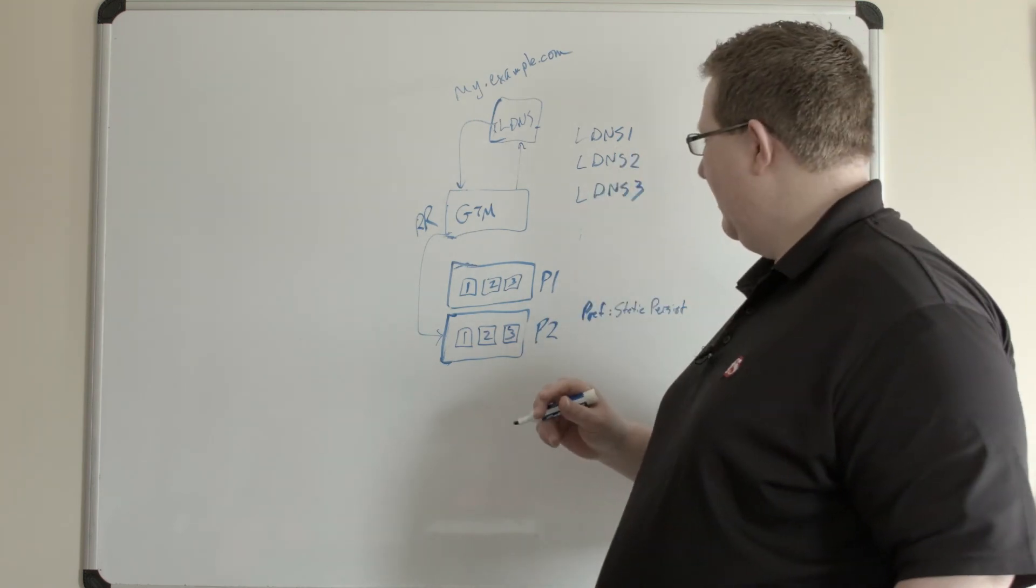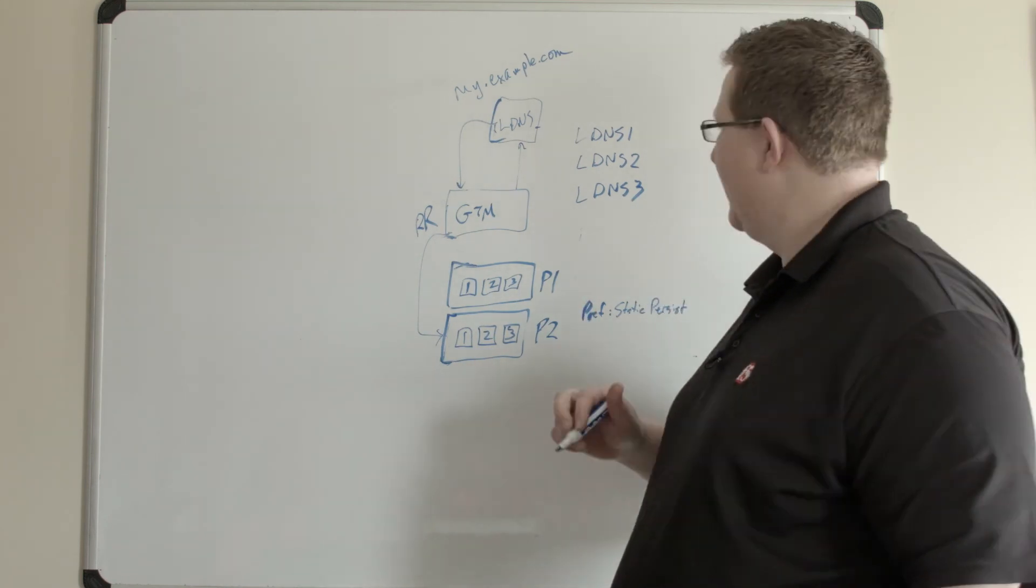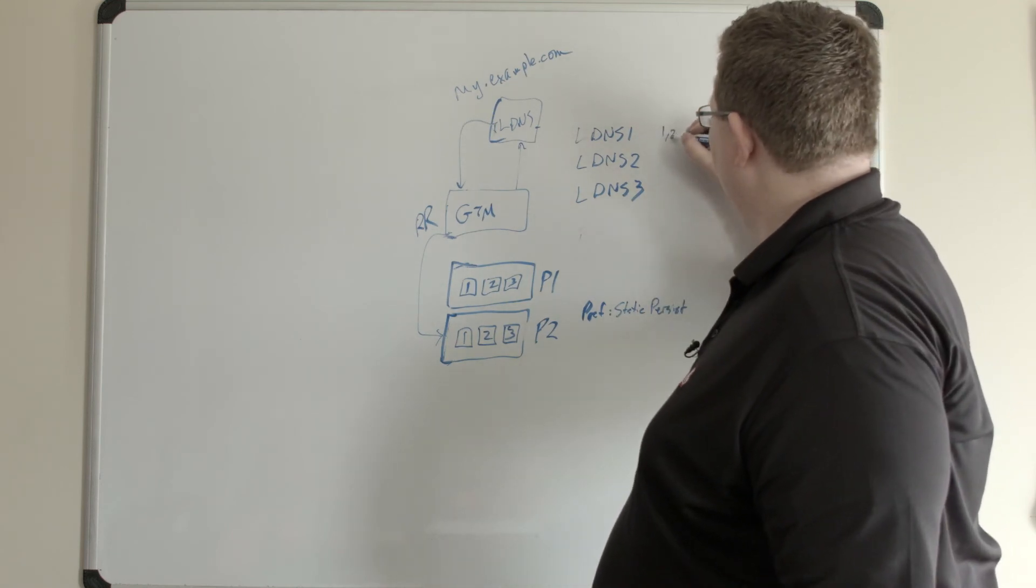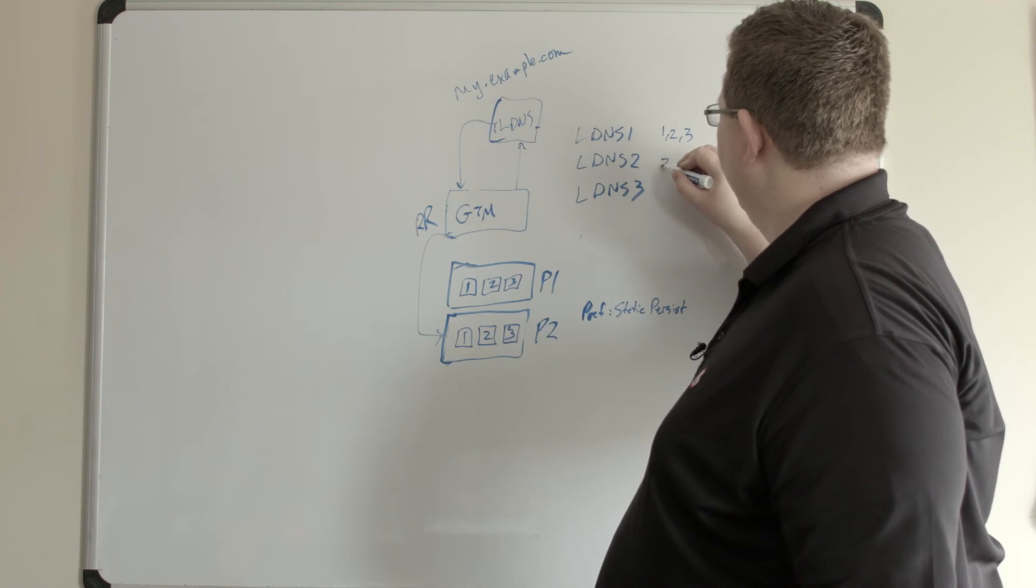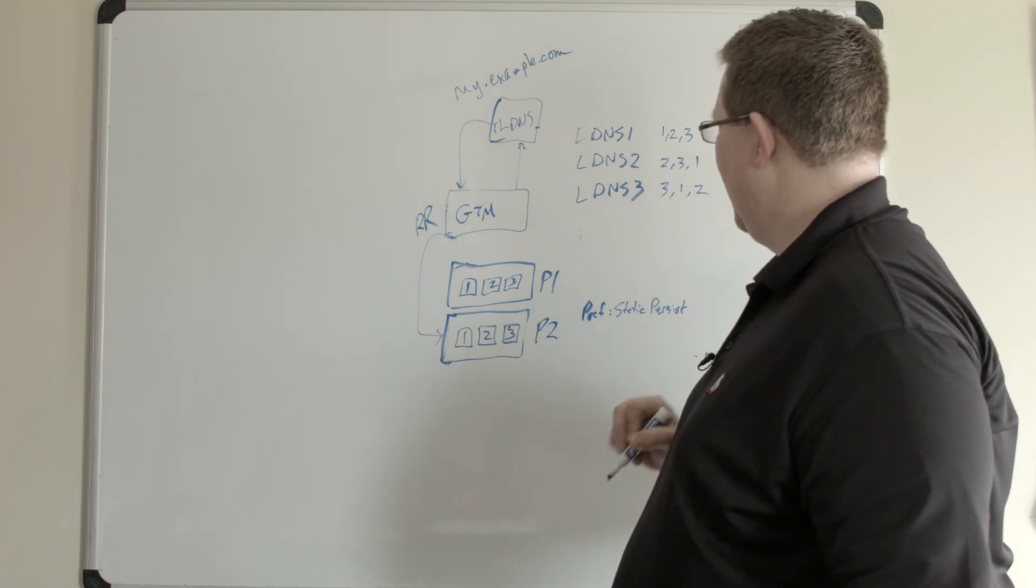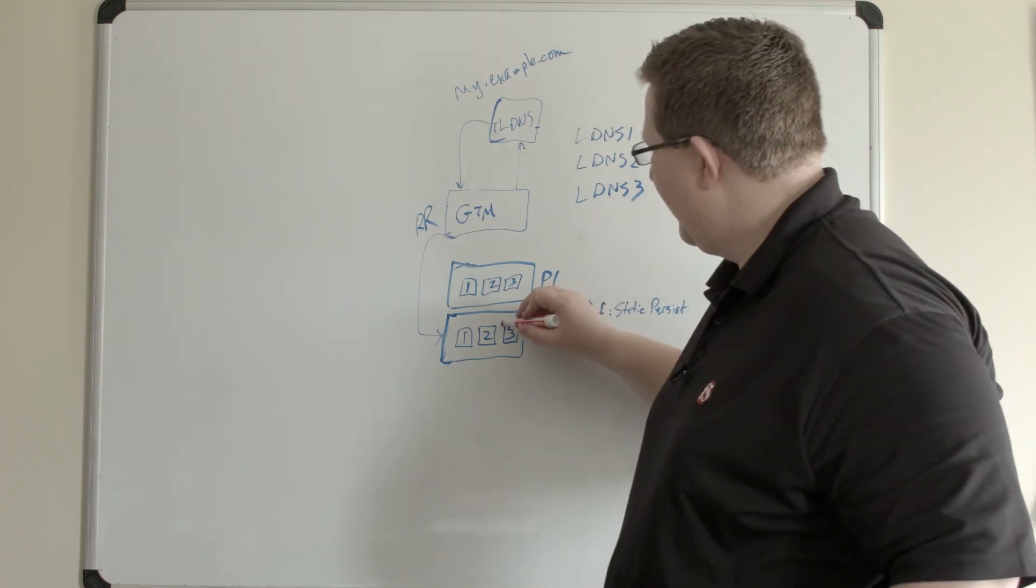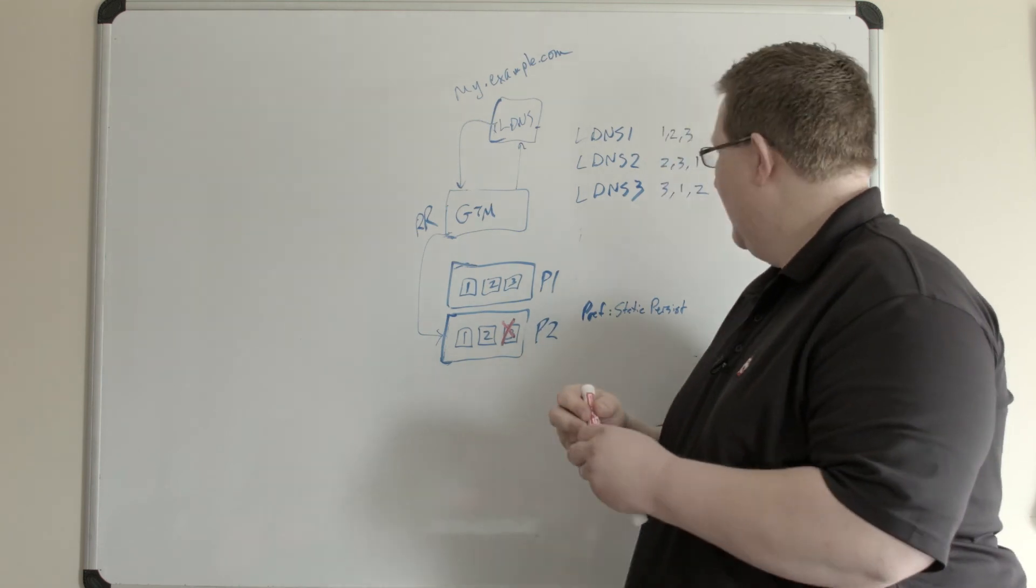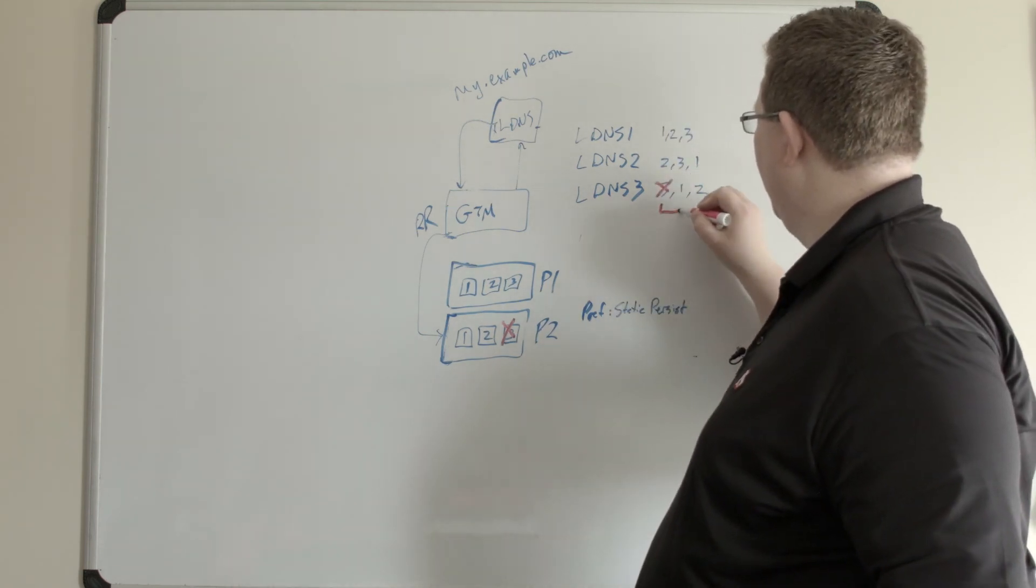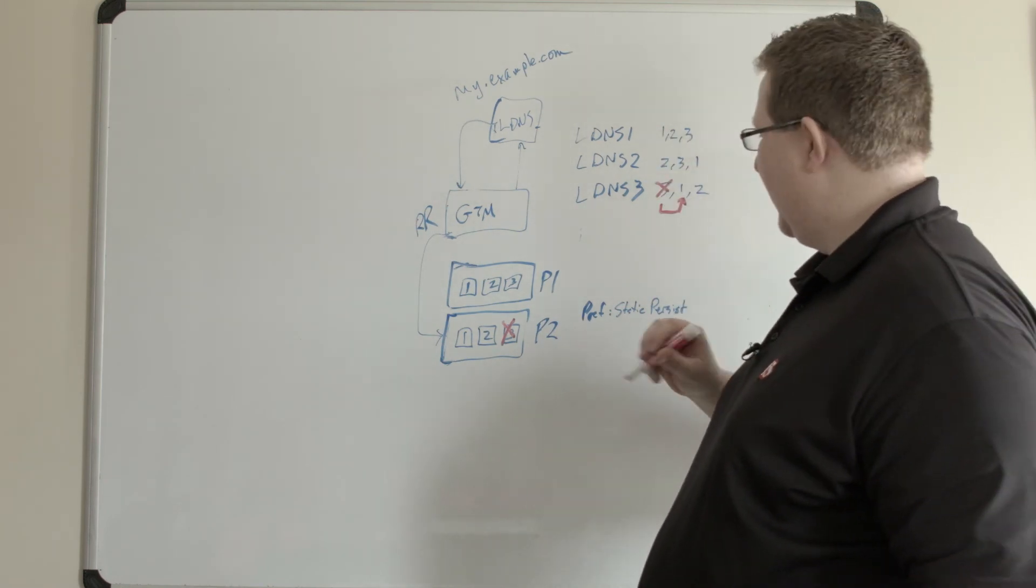GTM has an algorithm that will order the pool members for each LDNS server uniquely, so that all the LDNS don't just get bound to one pool member. Let's say for example, for LDNS one that order is server one, two, three. For two it's two, three, one. And for three it's three, one, two. In the event I lose server three, that means LDNS server three is then going to be moved to server one. LDNS one and two are going to be fine.